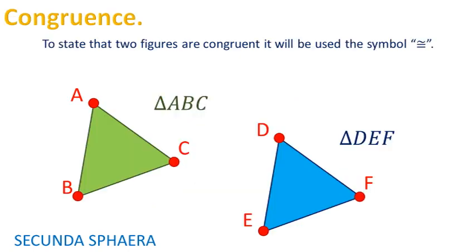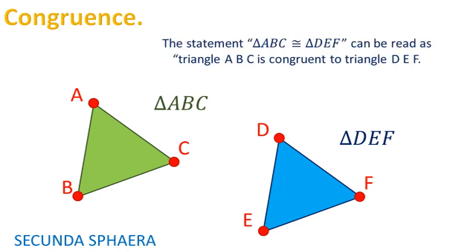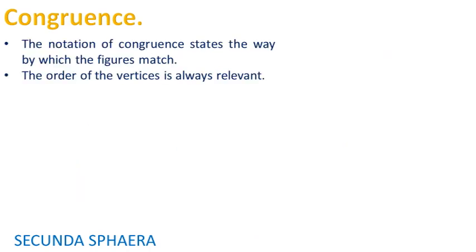To state that two given figures are congruent, it will be used this symbol, congruent to. The notation of congruence of two figures is subtle. The expression can be read as triangle ABC is congruent to triangle DEF. The notation will state the way by which the figures match each other. That is, in the notation of congruence, the order of the vertices of the figures is always relevant, even for triangles.